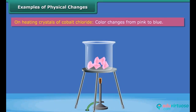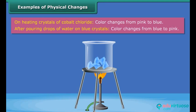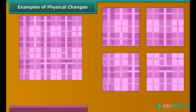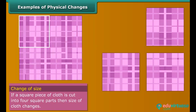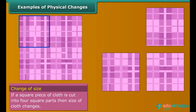Take crystals of cobalt chloride, which are pink in color. On heating, these crystals change to blue. When some drops of water are poured on the blue crystals, they regain their pink color. Also, if you cut a piece of cloth into four square pieces, the properties of the cloth remain the same — so this is a physical change.